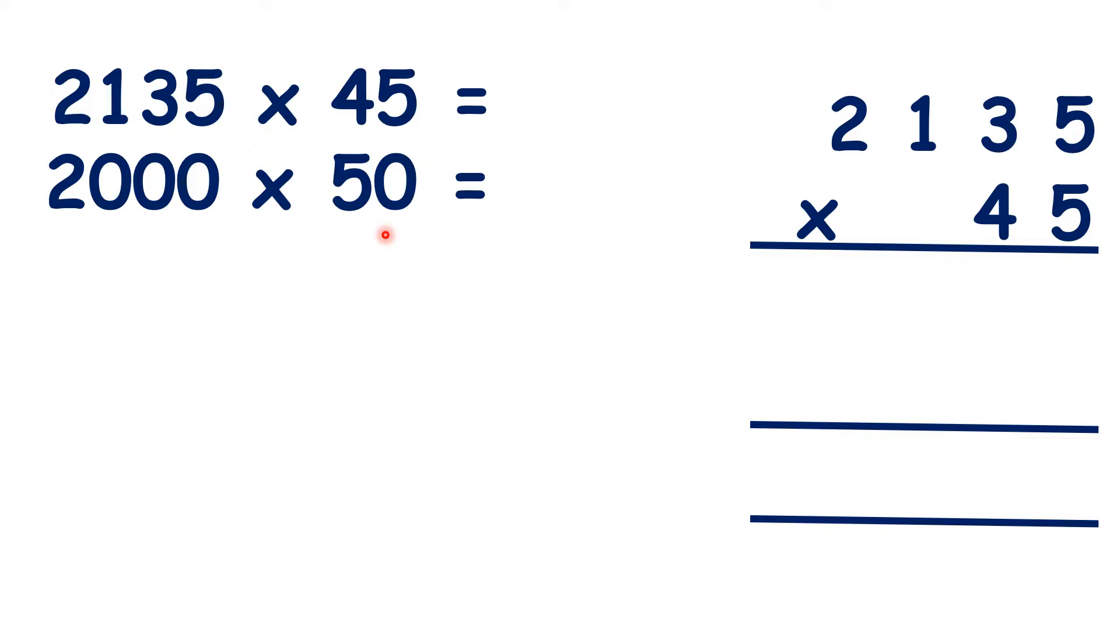So, what is 2,000 times 50? It's 100,000, because 2 times 5 is 10, and then, because we have a total of 4 end zeros in the question, 3 here and 1 here, we need 4 end zeros in our answer.